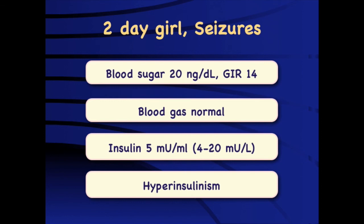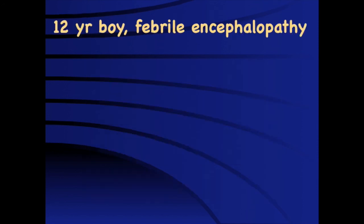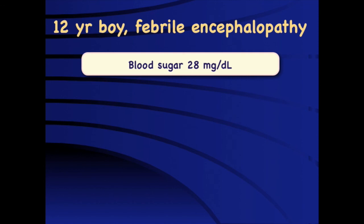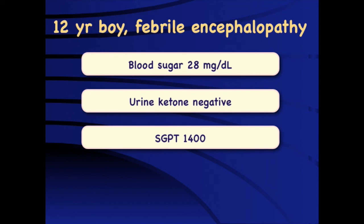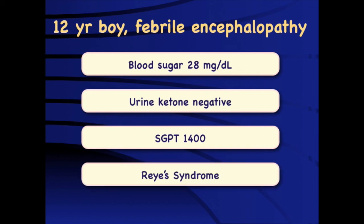Case 6: A girl with seizures, very low blood sugar, very high glucose infusion requirement, normal blood gas, and insulin level of 5 (reference 4–20) — this is definitely hyperinsulinism, because any detectable insulin during hypoglycemia is significant. Case 7: A 12-year-old boy with febrile encephalopathy, blood sugar 28, urine ketones negative — non-ketotic hypoglycemia — with elevated SGPT. This is a typical picture of Reye's syndrome, and fatty acid oxidation defects are a very close differential, typically presenting with transient transaminitis and encephalopathy.